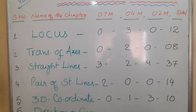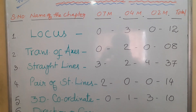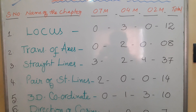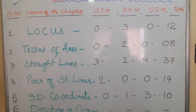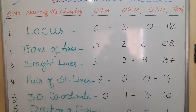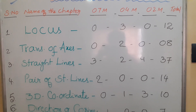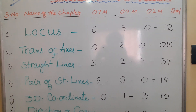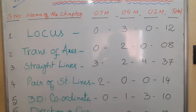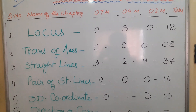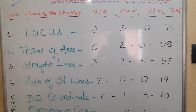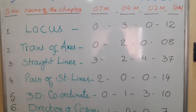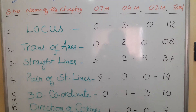Third one is Straight Lines. From Straight Lines: 7-mark questions — 3; 4-mark questions — 2; 2-mark questions — 4. Total weightage is 37 marks. Highest weightage is given to this chapter, Straight Lines — 37 marks. Please concentrate more on this chapter.